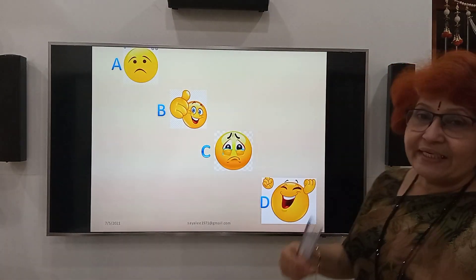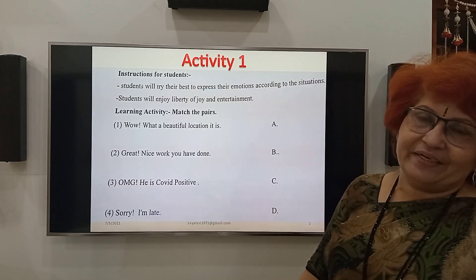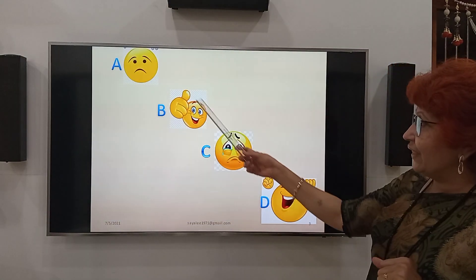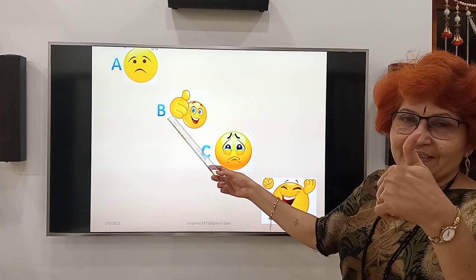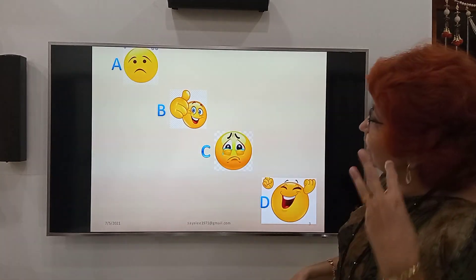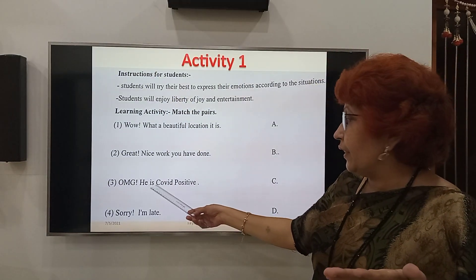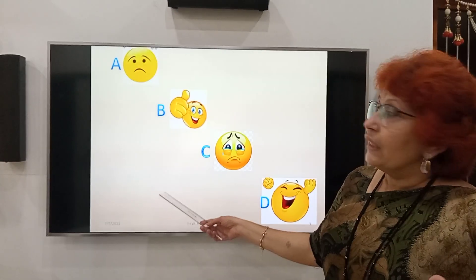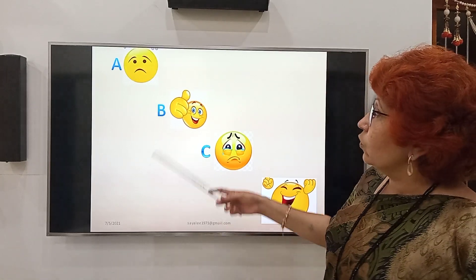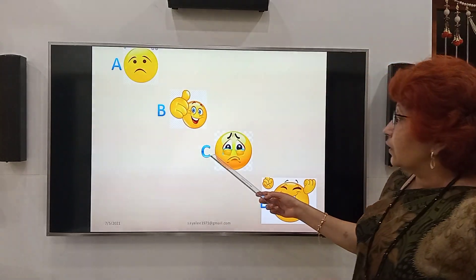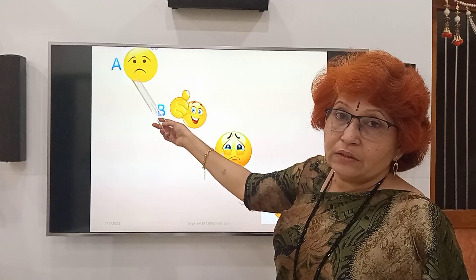See the second sentence: 'Great. Nice work you have done.' And the emoji here — yes, you have correctly guessed — it is B. See the third sentence: 'Oh my God. He is COVID positive.' This is sad. You can see the sad gestures on my face, so this is A. See the sad face.